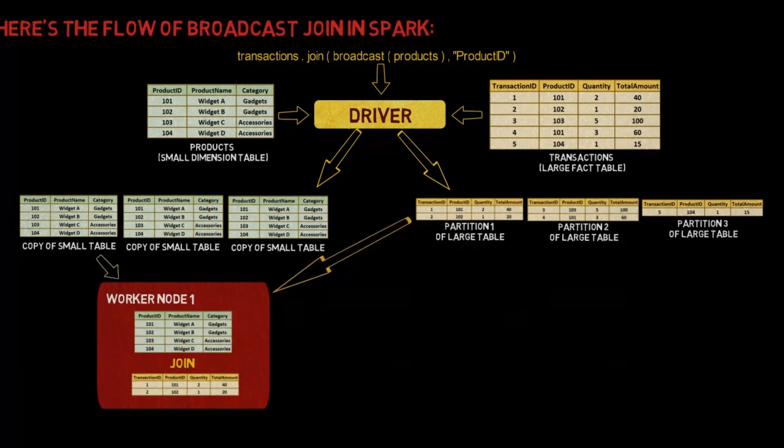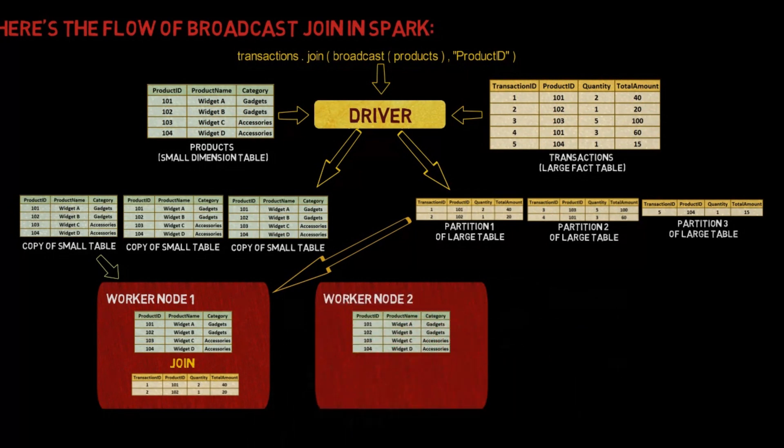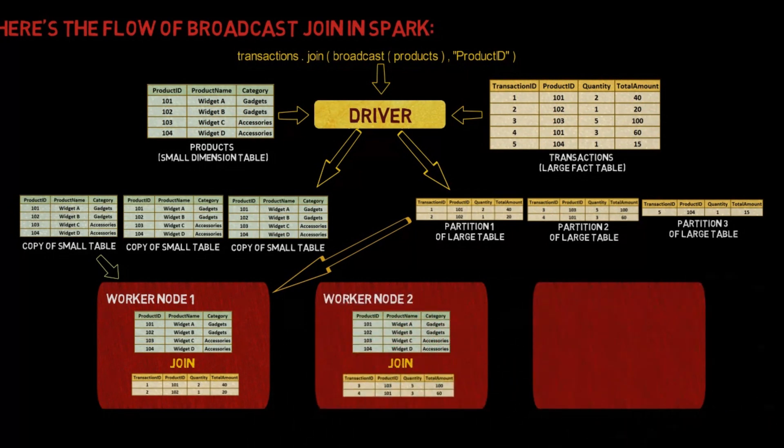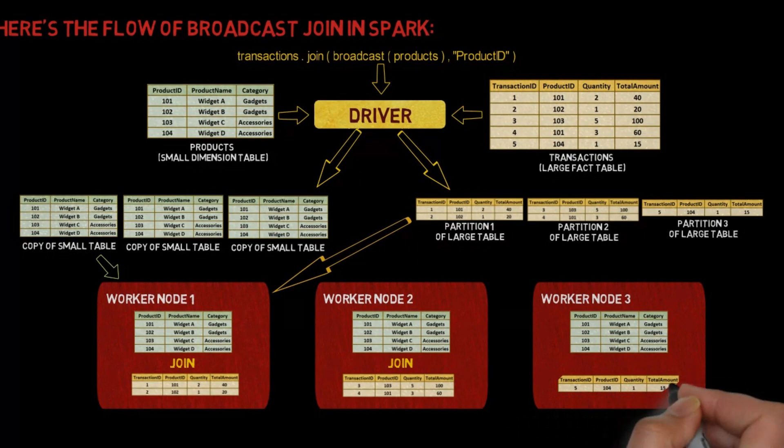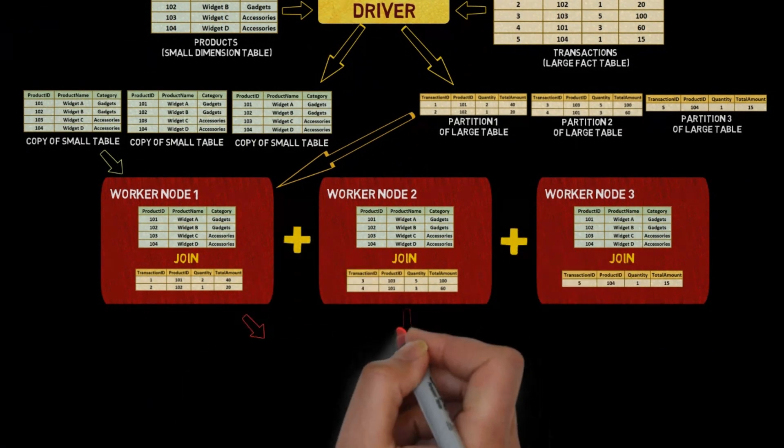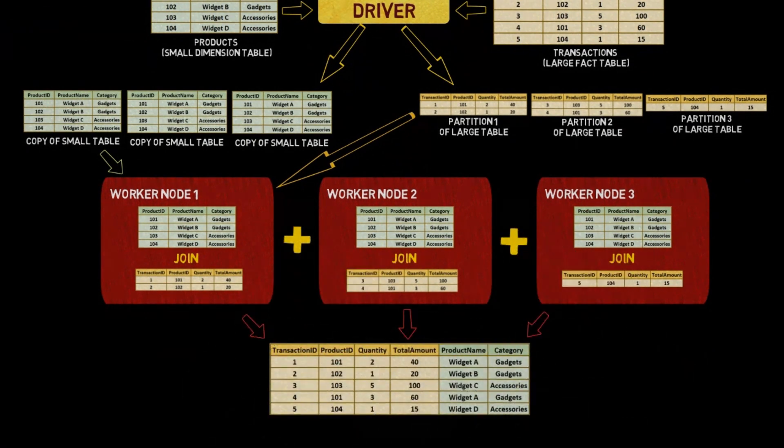Each node performs the join operation locally using the broadcasted small dataset and the part of the large dataset it holds. The results from each node are collected and combined to produce the final join dataset.